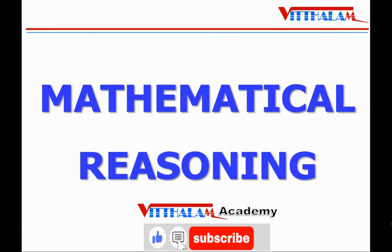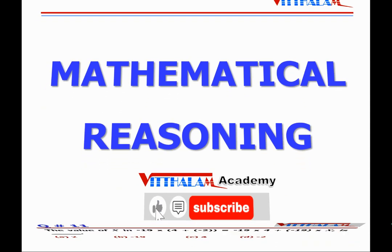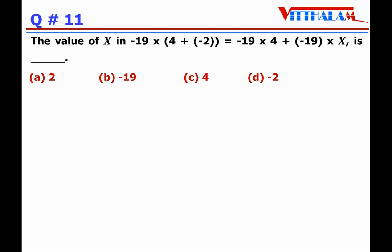Section: Mathematical Reasoning, Question number 11. Find the value of x in: minus 19 multiplied by (4 + (minus 2)) equals minus 19 into 4 plus minus 19 into x.